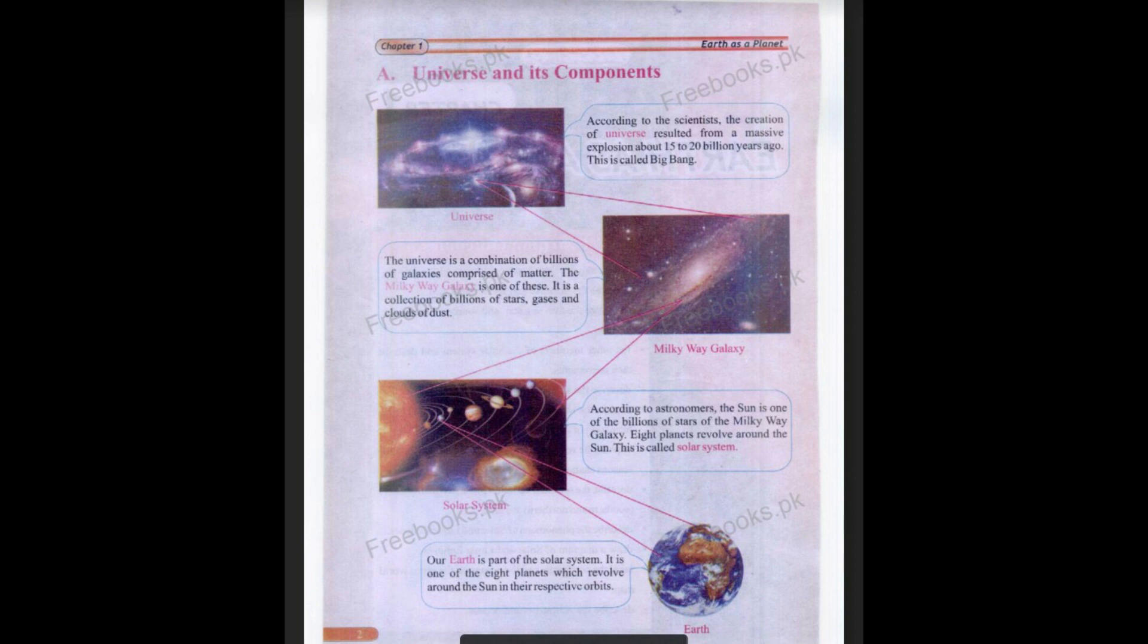Now let's read a little bit about our solar system. According to the astronomers, the sun is one of the billions of stars of a Milky Way galaxy. Eight planets revolve around the sun. This is called the solar system. Earth is a part of the solar system. It is one of the eight planets that revolve around the sun in their respective orbit. Our solar system is a part of Milky Way galaxy, and our Milky Way galaxy is a part of the universe.